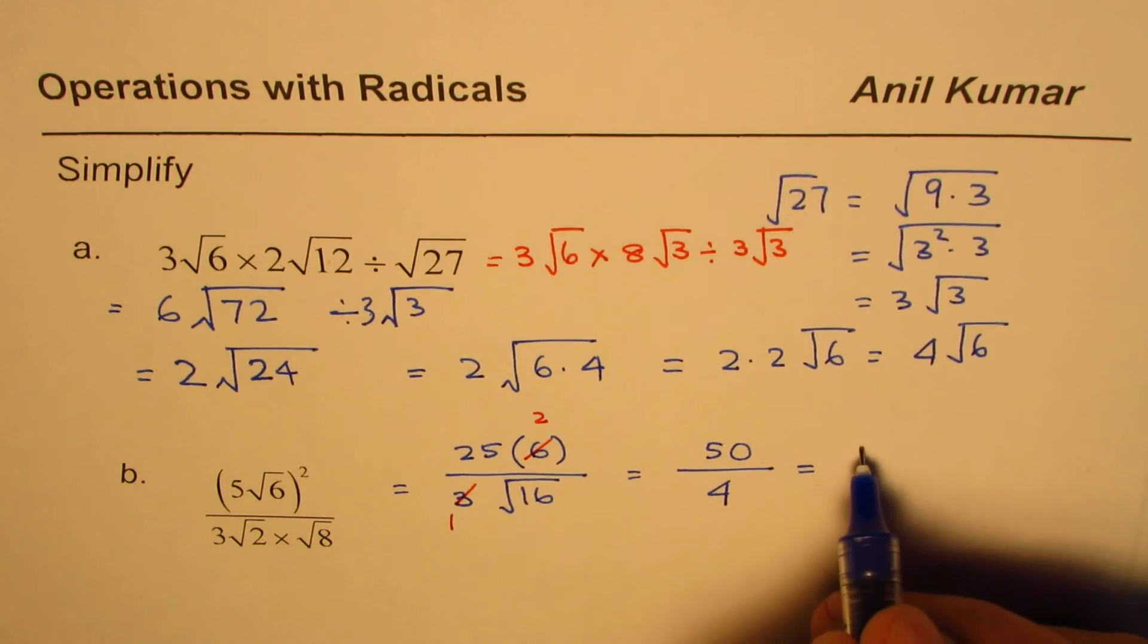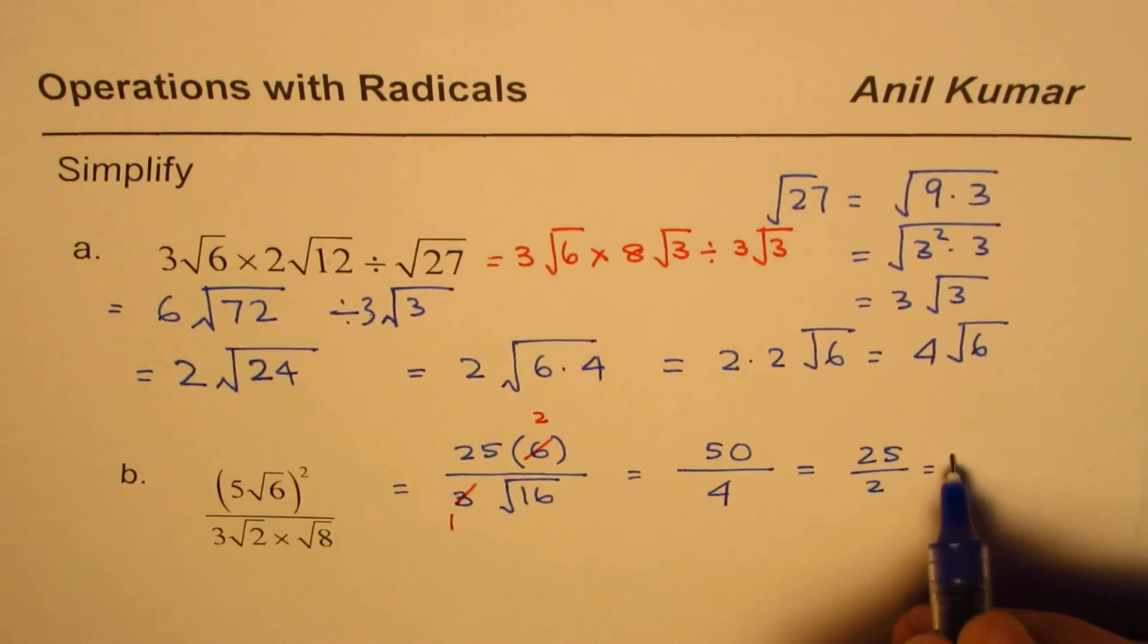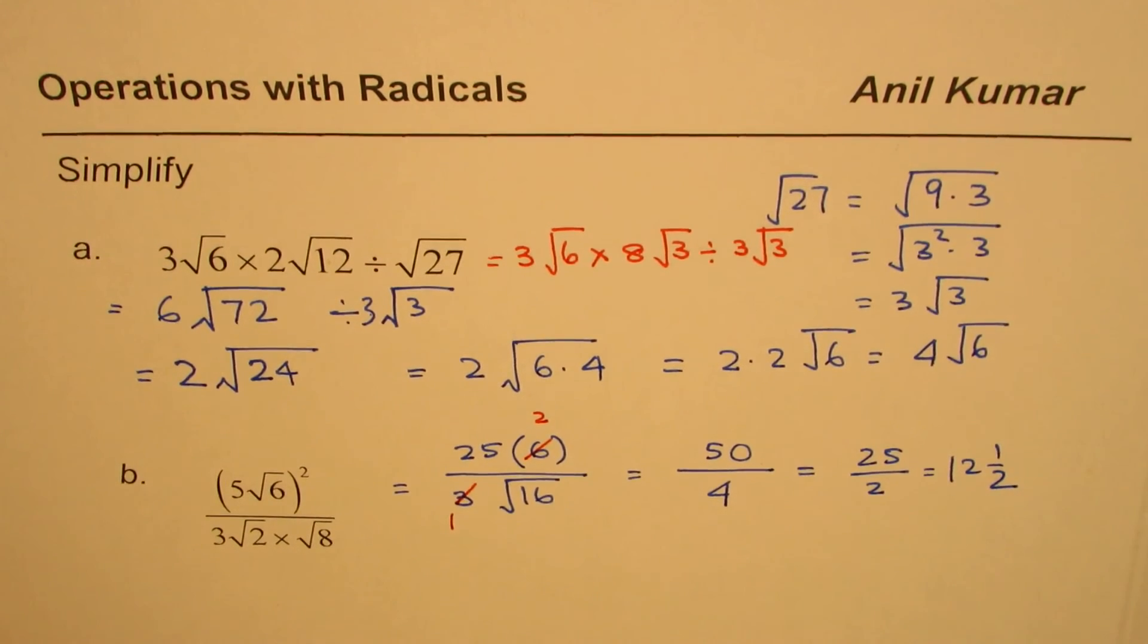Now we could divide 50 by 4 and write down the answer as 25 over 2, or 12 and a half. So that is how we could actually simplify and write down our answer. I hope that helps. Thank you and all the best.